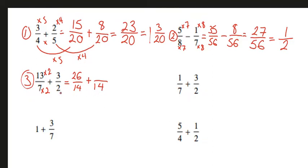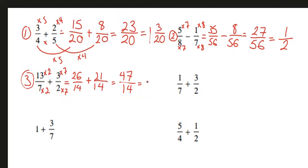How do we get from 2 to 14? This will be times 7. And what we do to the bottom, we also do to the top. 3 times 7 is 21. Now that we have the same denominator, we can add the numerators. 26 plus 21 is going to be 47 over 14. 14 goes into 47 three times, with a remainder of 5 out of 14.